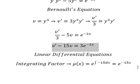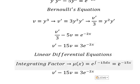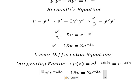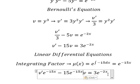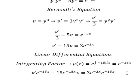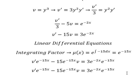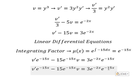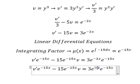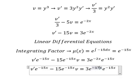And we have e to the power of negative 15x. That means we multiply both sides by this one. We have negative 2x and negative 15x — we combine them together and we have negative 17x.